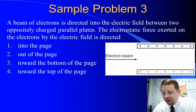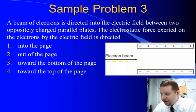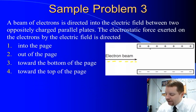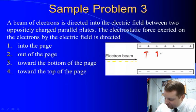Another one here. We have a beam of electrons, negatively charged particles, directed into the electric field between two oppositely charged parallel plates. The electrostatic force exerted on the electrons by the field is directed. Well, if we've got positive charges toward the top, the electrons are going to feel a force toward those, an attractive force. So they will feel a force in this direction due to the top plate.